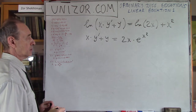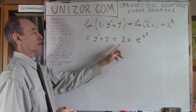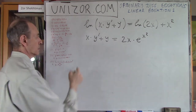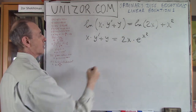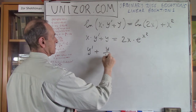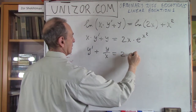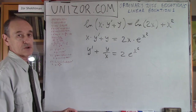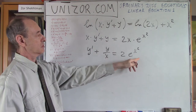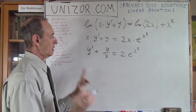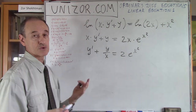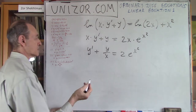Now, is it linear? Well it's linear already, but it's not normalized because there's still a function x multiplying y'. So I divide by x and I have: y' + (1/x)·y = 2·e^(x²). Now this is a linear equation: u(x) = 1/x and v(x) = 2·e^(x²). I can attempt to solve it using the same procedure.